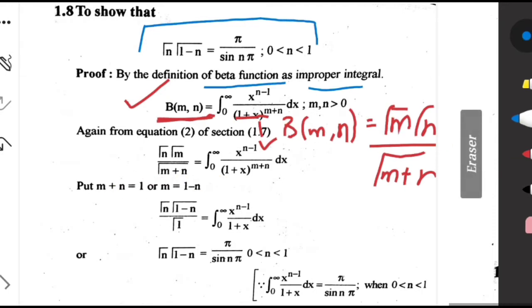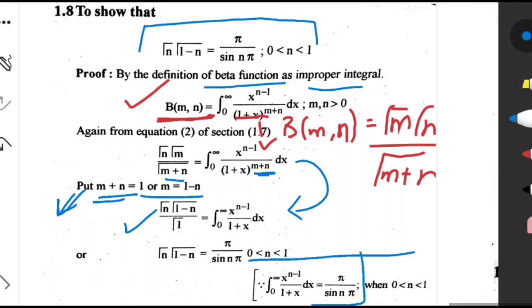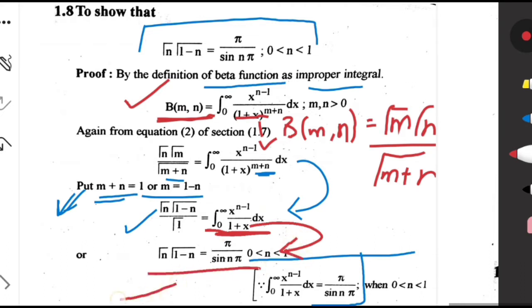We put m+n = 1, so m = 1-n. After substituting these values we get Γ(m)·Γ(n) = Γ(1-n)·Γ(n), and the power m+n becomes 1. Next, we use the known formula that the integral from 0 to infinity of x^(n-1)/(1+x) dx = π/sin(nπ). Replacing the integral with this gives us Γ(n)·Γ(1-n) = π/sin(nπ), which is exactly what we were looking for.